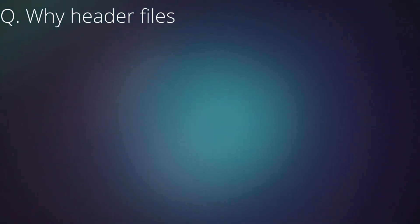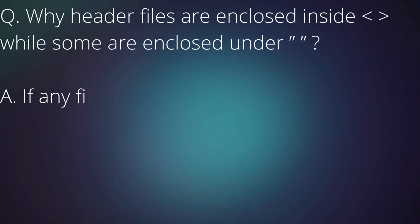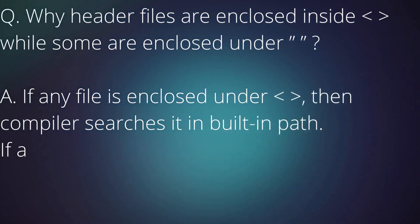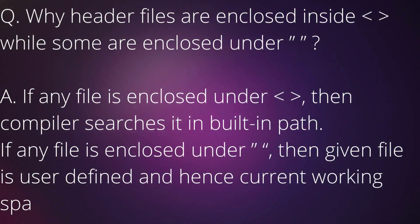Question: Why header files are enclosed inside angle brackets while some are enclosed under quotes? Answer: If any file is enclosed under angle brackets, then compiler searches it in built-in path. If any file is enclosed under quotes, then given file is user-defined and hence the current working space is checked.